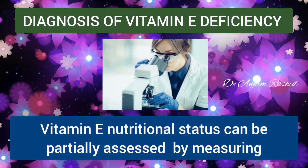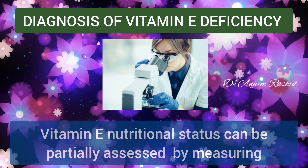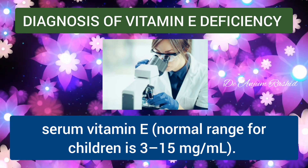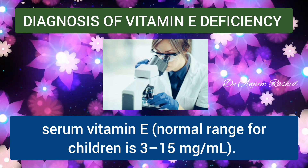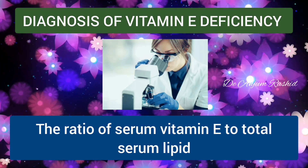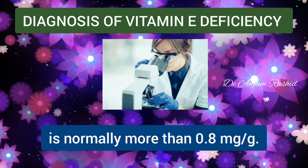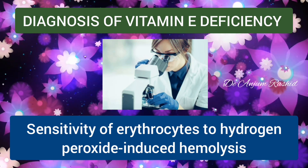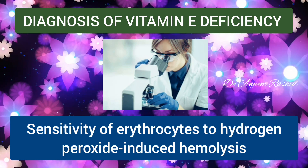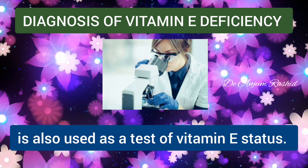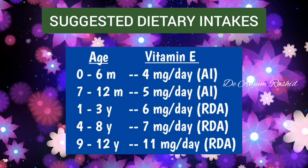Vitamin E nutritional status can be partially assessed by measuring the serum Vitamin E level. The normal range for children is 3 to 15 milligrams per milliliter. The ratio of serum Vitamin E to total serum lipid is normally more than 0.8 milligrams per gram. Sensitivity of the erythrocyte to hydrogen peroxide-induced hemolysis is also used as a test of Vitamin E status.